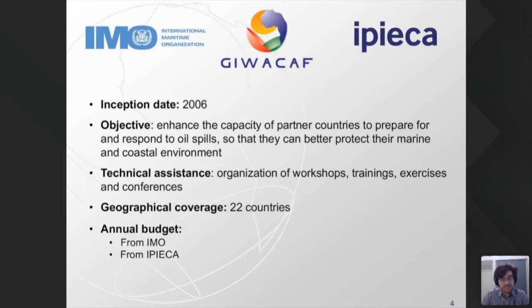While the Global Initiative was launched in 1996, GI-WACAF — the regional project for West, Central and Southern Africa — started in 2006 with essentially the same objective: enhancing the capacity of partner countries to prepare for and respond to oil spills, for better protection of the marine and coastal environment and communities. We are a technical assistance project.